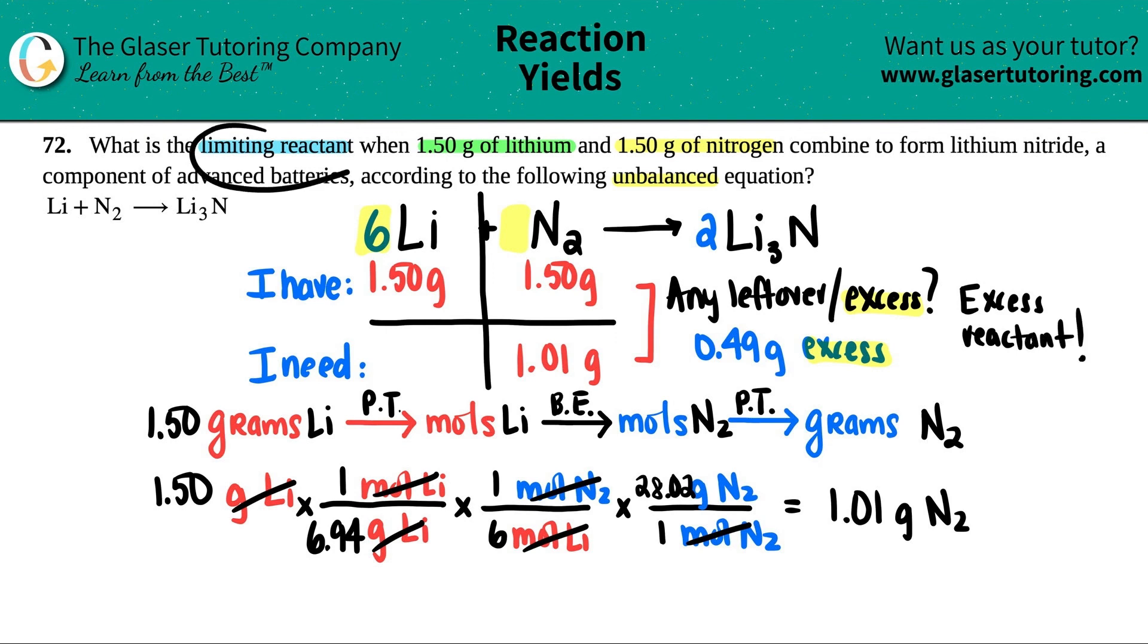The limiting reactant is always going to be used up. So basically if we did it the opposite way and we found out this, I can guarantee you that this number is higher than what you started with. It says I have 1.5 grams, but I need more. Is there any leftover? No, because I'm using up all the 1.5 grams. So in this case, you can be sure that lithium is the limiting reactant.